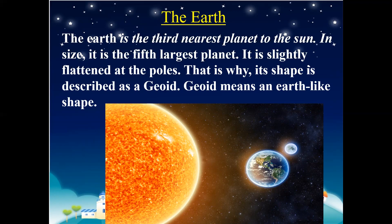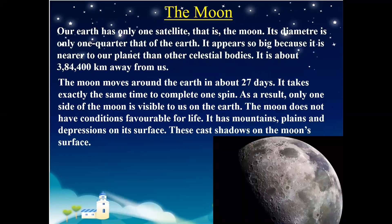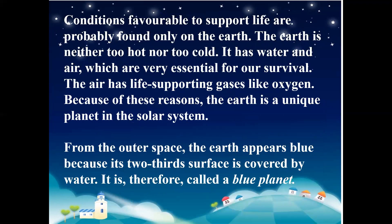The Earth is the third nearest planet to the sun. In size, it is the fifth largest planet. It is slightly flattened at the poles, which is why its shape is described as geoid — geoid means Earth-like shape. Conditions favorable to support life are found on Earth: it is neither too hot nor too cold, it has water and air which are essential for survival, and it also has life-supporting gases like oxygen. Because of these reasons, Earth is called a unique planet in the solar system. From outer space, the Earth appears blue because two-thirds of its surface is covered by water, and so it is known as the blue planet.